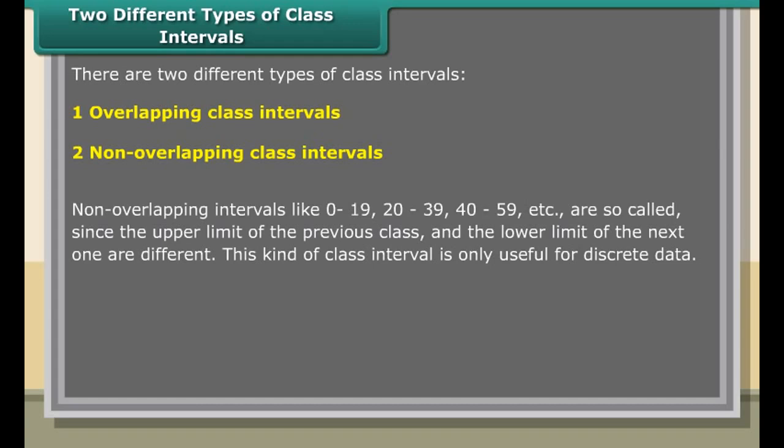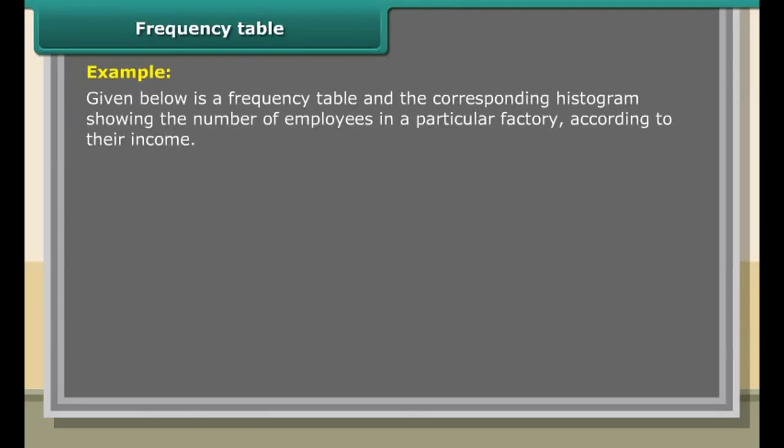By looking into the table, we can get some information: number of students who scored less than 50 marks, number of students who passed, number of students who scored above 80, and we can identify the performance of the class. The method of classifying data into class intervals is called grouping of data.